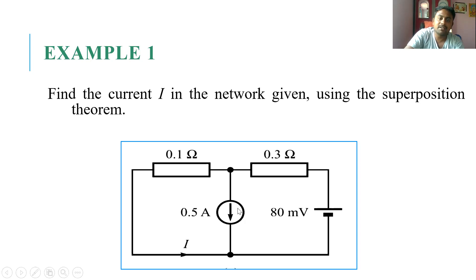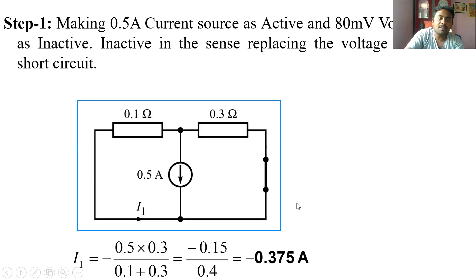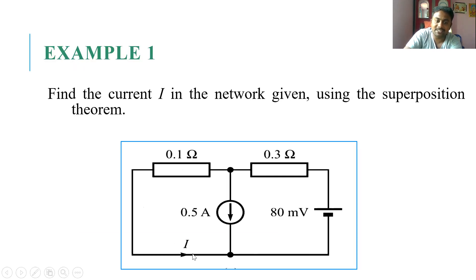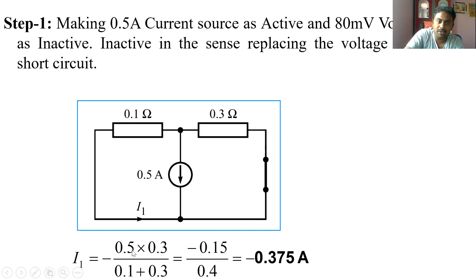In Step 1, I make the 0.5 A current source active and replace the 80 mV voltage source with a short circuit. The total current divides into two paths. The current direction in this step is opposite to the given reference direction, so I consider it negative. Applying the current division rule: I1 = 0.5 × (opposite branch resistance 0.3) / (0.1 + 0.3).